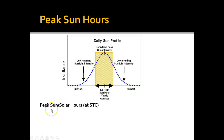With peak sun, what we're trying to determine is how many hours in an average day the sun is equivalent to 1,000 watts per meter squared. So it's sort of implied that this is at STC — our standard test conditions. At standard test conditions we're looking at 1,000 watts per meter squared, which is how solar panels are rated — how we determine how many watts you're supposed to get out of a solar panel.